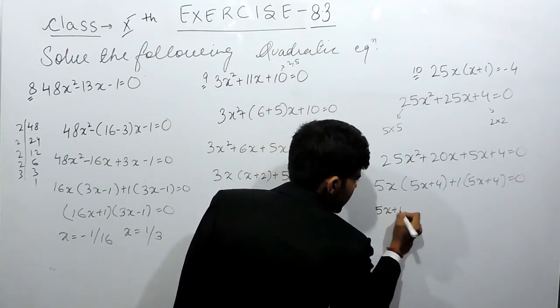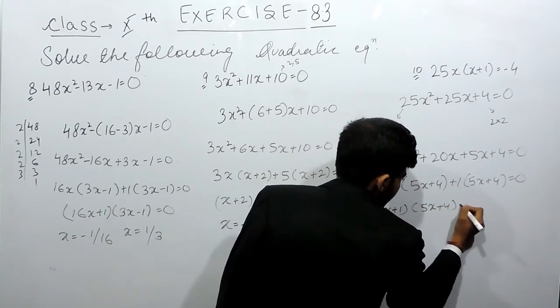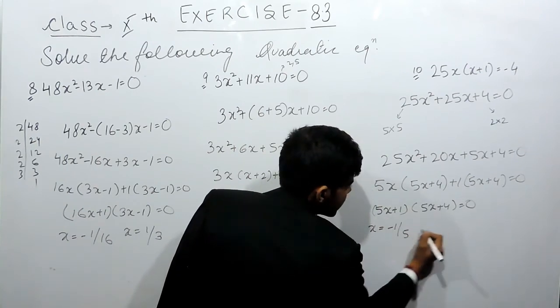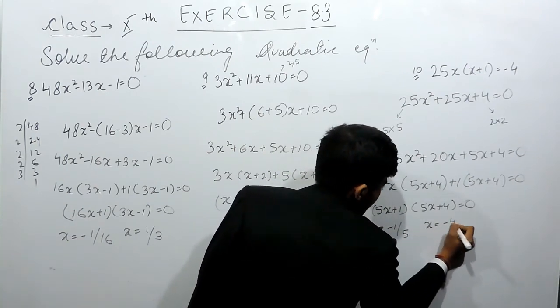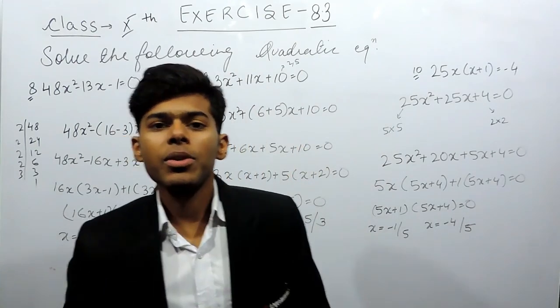So 5x + 1, 5x + 4 = 0, x = -1/5 and x = -4/5. So this is how you can solve this question.